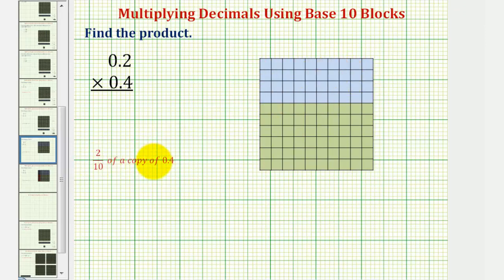And now because we want 2 tenths of a copy of 4 tenths, we'll partition 4 tenths into 10 equal pieces, and then take 2 of them for 2 tenths of 4 tenths. So let's go ahead and partition this vertically. And we'll partition the entire flat.